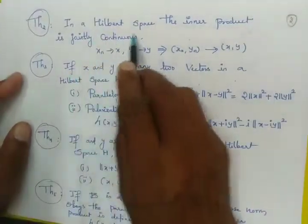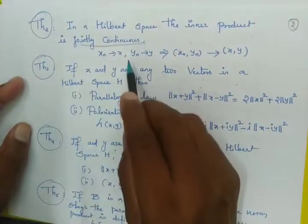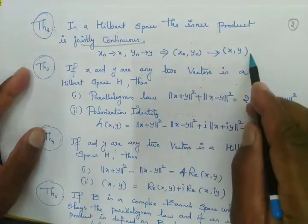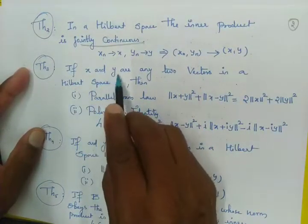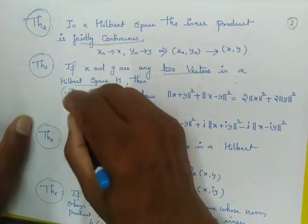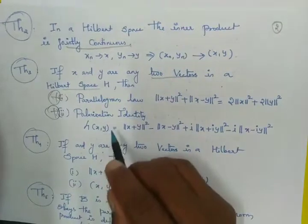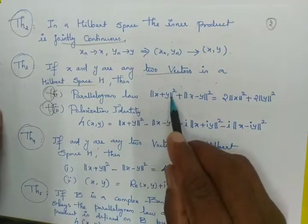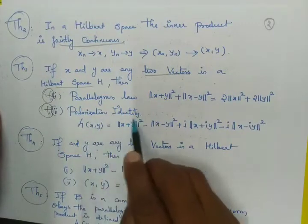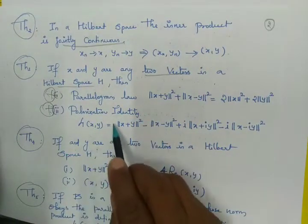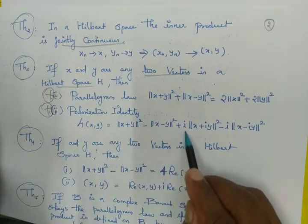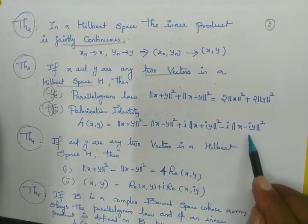Standard theorems: In a Hilbert space, the inner product is jointly continuous — when Xn → X and Yn → Y, that implies (Xn, Yn) → (X, Y). If X and Y are any two vectors in a Hilbert space H, the parallelogram law states: ‖X + Y‖² + ‖X − Y‖² = 2(‖X‖² + ‖Y‖²). The polarization identity: 4(X, Y) = (1/4)[‖X + Y‖² − ‖X − Y‖² + i‖X + iY‖² − i‖X − iY‖²].